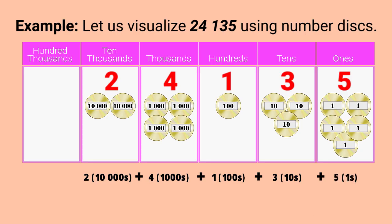2 10,000s is equal to 20,000. 4 1000s is equal to 4,000. 1 100s is equal to 100. 3 10s is equal to 30. And, 5 1s is equal to 5.